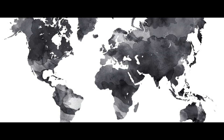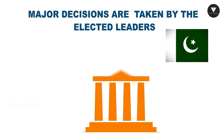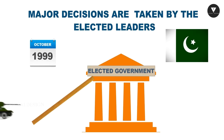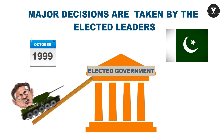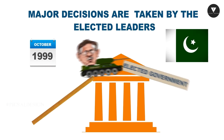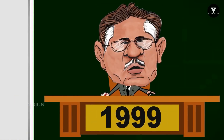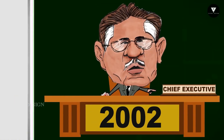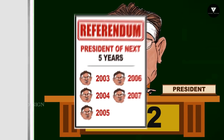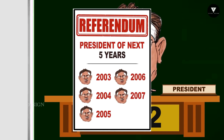Let us visit a few countries and critically try to understand if they could be called a democracy. The first country is Pakistan. In Pakistan, General Parvez Musharraf led a military coup in October 1999. He illegally overthrew the democratically elected government and went on to become the president of the country.